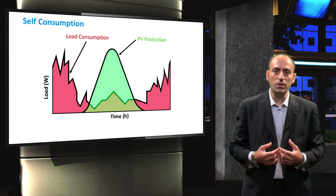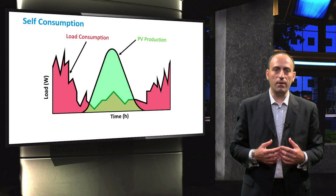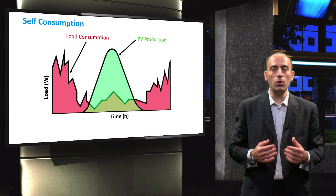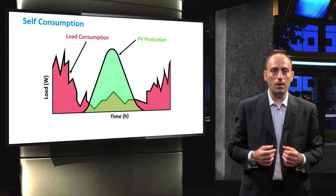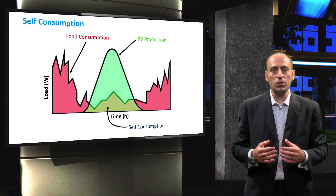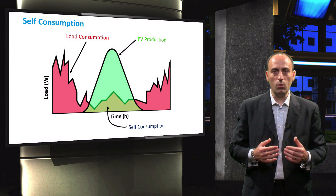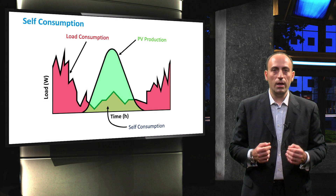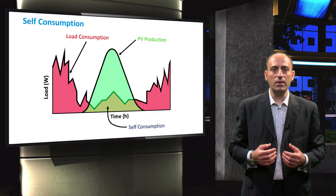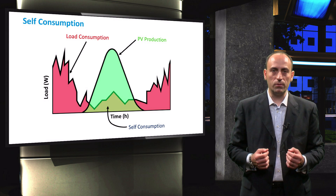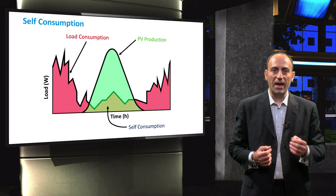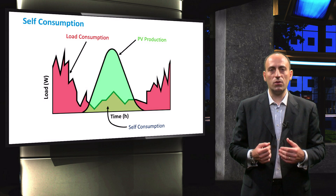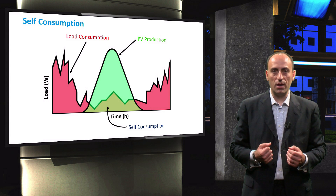Solar electricity is only available during the day, while the largest fraction of the load demand occurs during non-PV production hours. The small region in the middle, where the two areas overlap, corresponds to the self-consumption region. In this region, the load demand is fully met by the PV production. The excess PV generation during this period is fed into the grid, so that it can be retrieved at a later time.